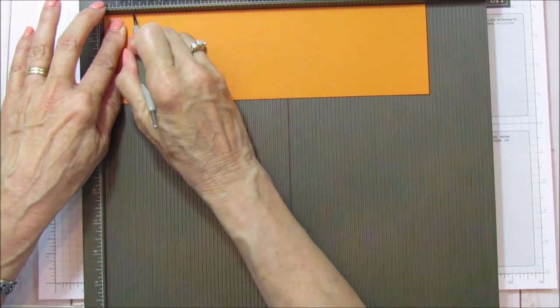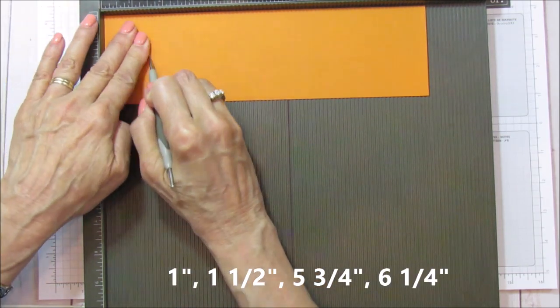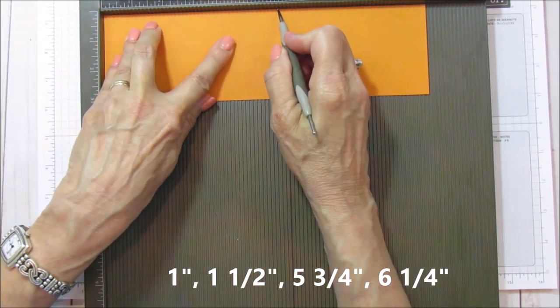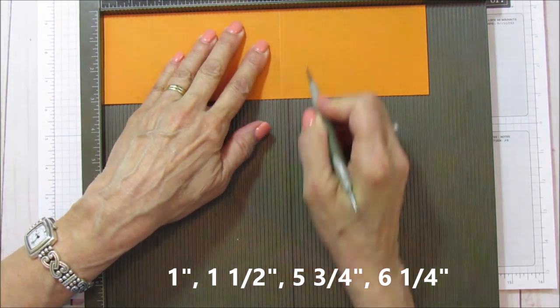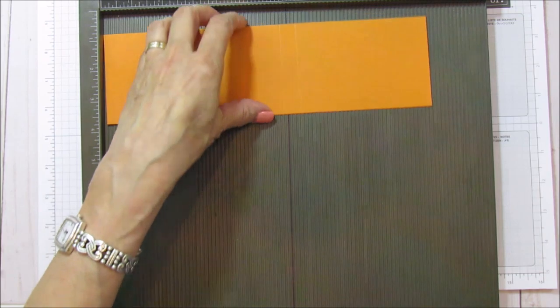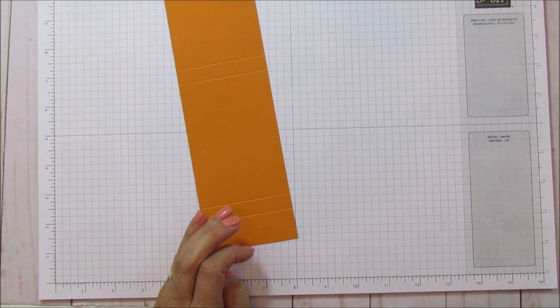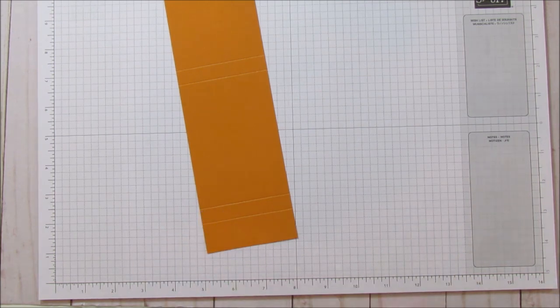You are only scoring on the ten and a half inch side. It makes it super quick and easy. We're gonna score this at one, one and a half, five and three quarters, and six and a quarter. So that is it for scoring, really quick and easy.